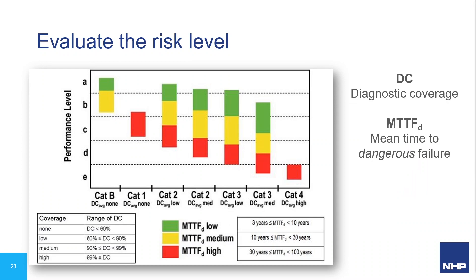Performance level is based on probability of dangerous failure per hour, but we still need to know what our safety control system should look like before doing calculations. There is a simplified process in the standards using a chart that looks at three factors: categories, DC (diagnostic coverage — the percentage of dangerous faults detected by the safety control system), and MTTFD (mean time to dangerous failure, given in years).